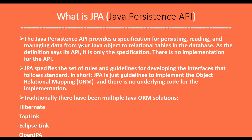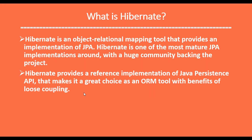JPA exposes interfaces and no implementation exists for JPA itself. There should be a third-party implementation for JPA. JPA specifies the rules and guidelines for developing interfaces that follow standards. In short, JPA is just the guidelines to implement Object Relational Mapping and there is no underlying code for the implementation.